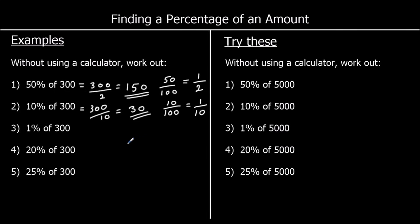1% of 300: 1% is the same as one-hundredth, and to find a hundredth, we divide by 100. So it's 300 divided by 100, which is 3.